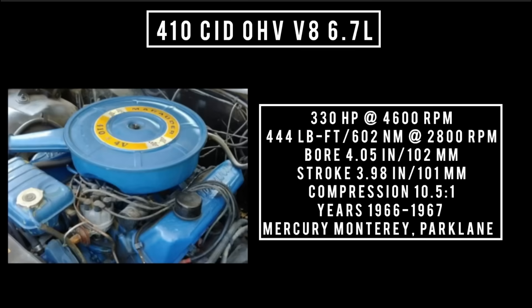Introduced in 1966 and called the Marauder V8: the 410 cubic inch displacement overhead valve V8, 6.7 liters. It's good for 330 horsepower at 4,600 RPM, 444 pound-feet or 602 newton meters at 2,800 RPM, with a bore of 4.05 inches and a stroke of 3.98 inches. Compression was 10.5 to 1. Used between 1966 and 1967, it could be found in Mercury products such as the Monterey and Park Lane. Don't get this confused with the 410 cubic inch MEL engine — nothing interchanges between these two. They are totally different engines from different engine families.